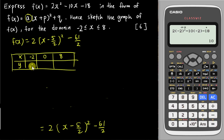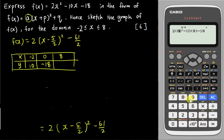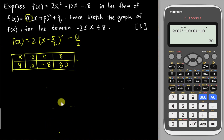The y value at x = -2 is 10. For x = 0, substituting gives negative 18 quickly. For x = 8, go back and change the input from -2 to 8 and press Enter — the result is 30. So we now have three coordinates: (-2, 10), (0, -18), and (8, 30).